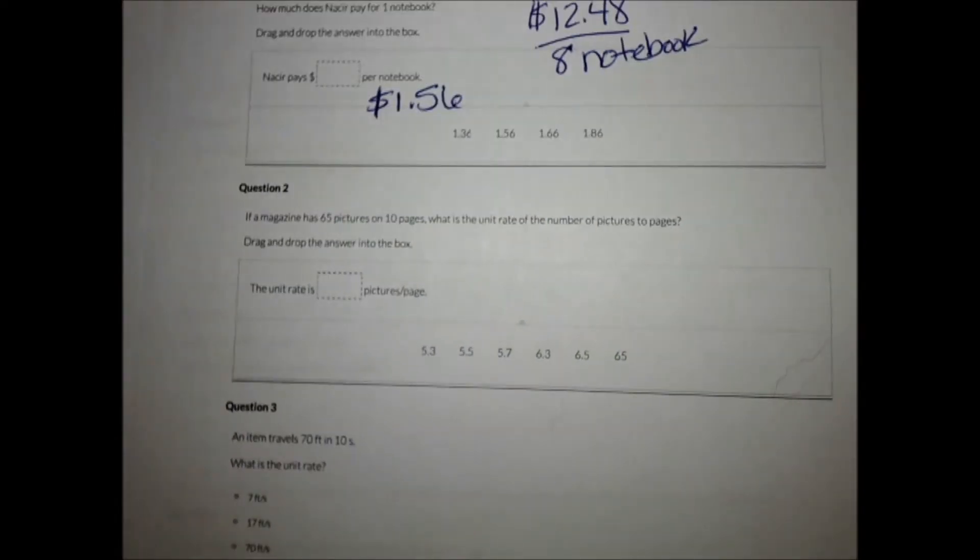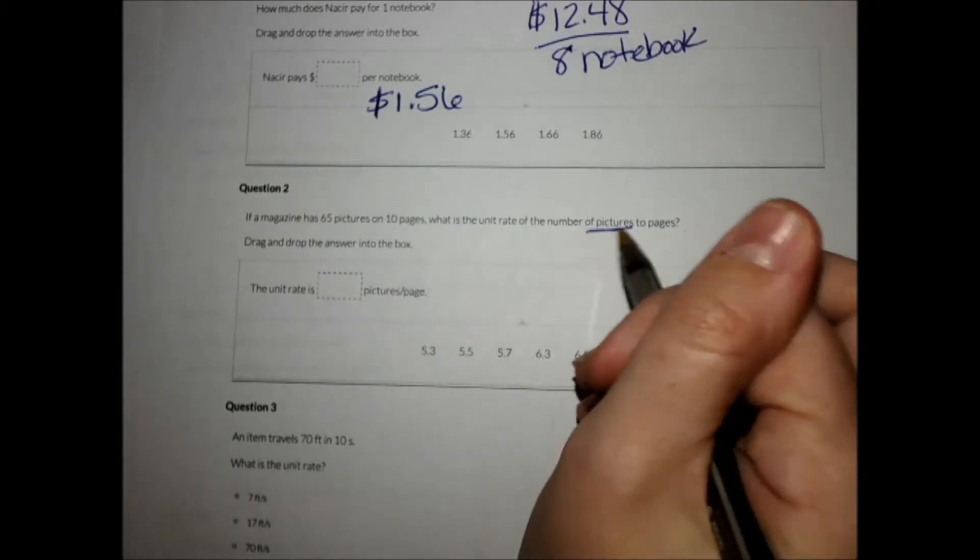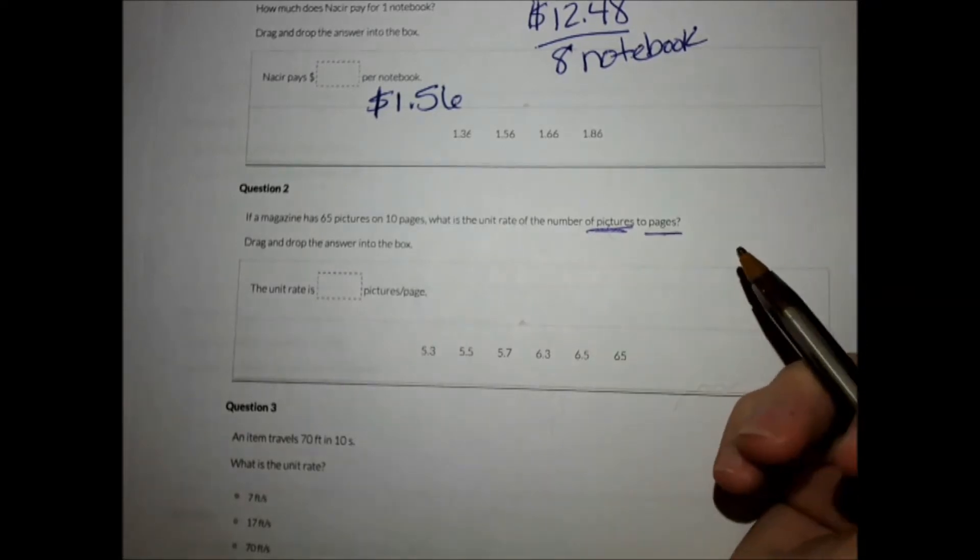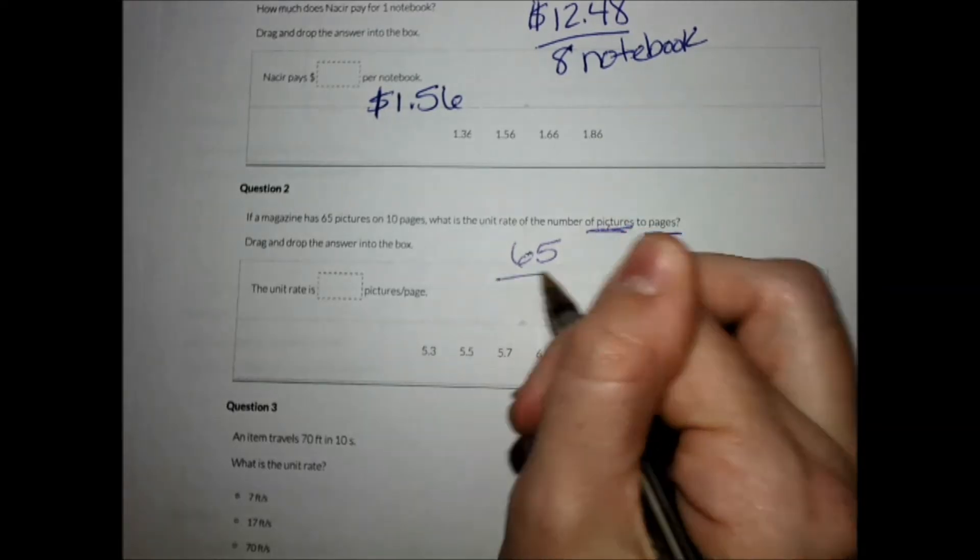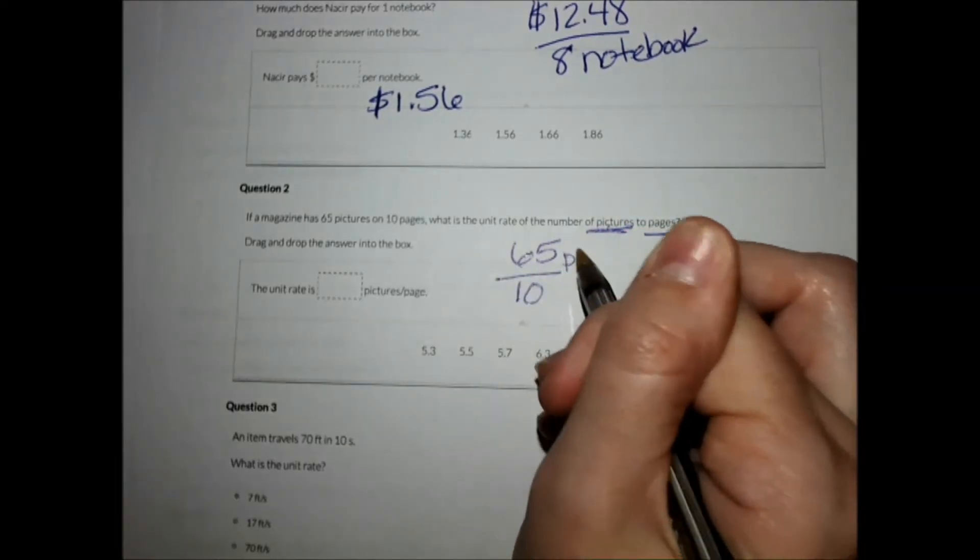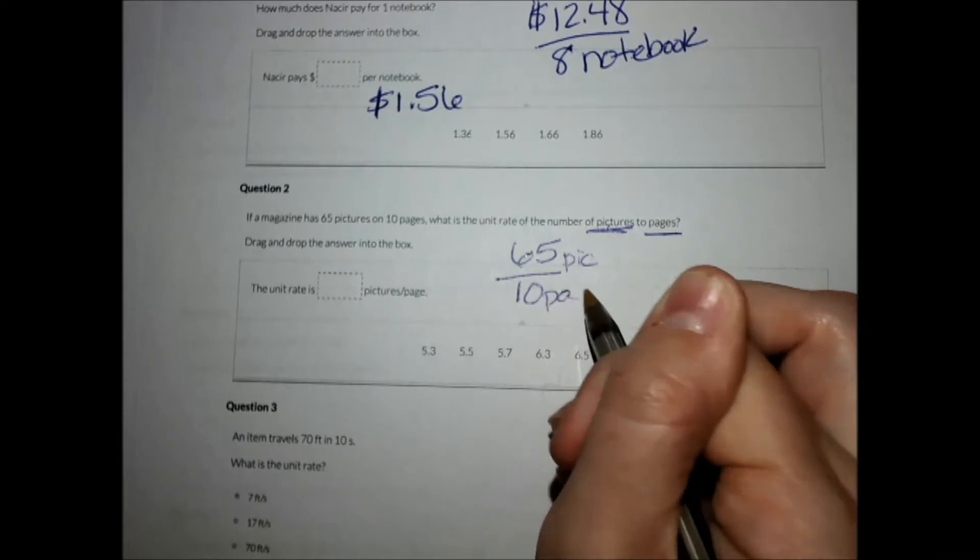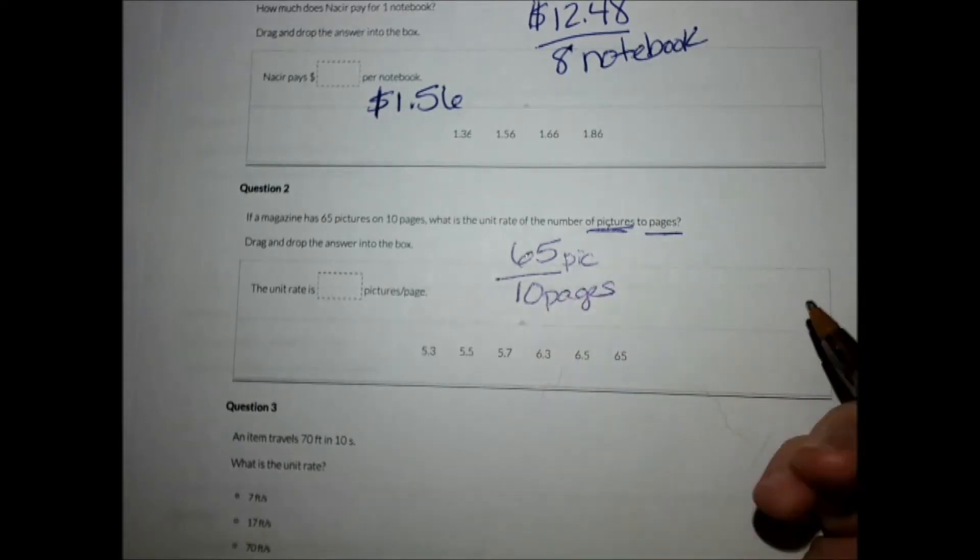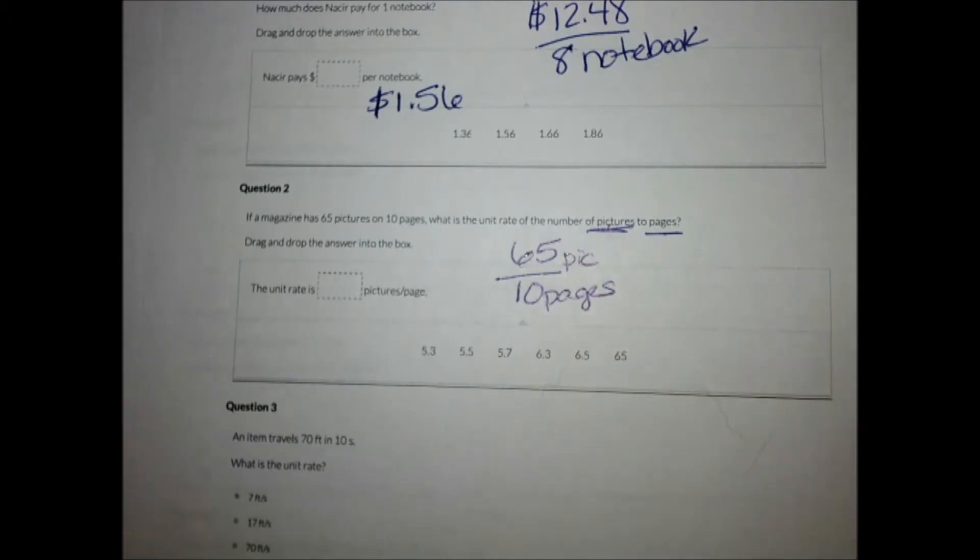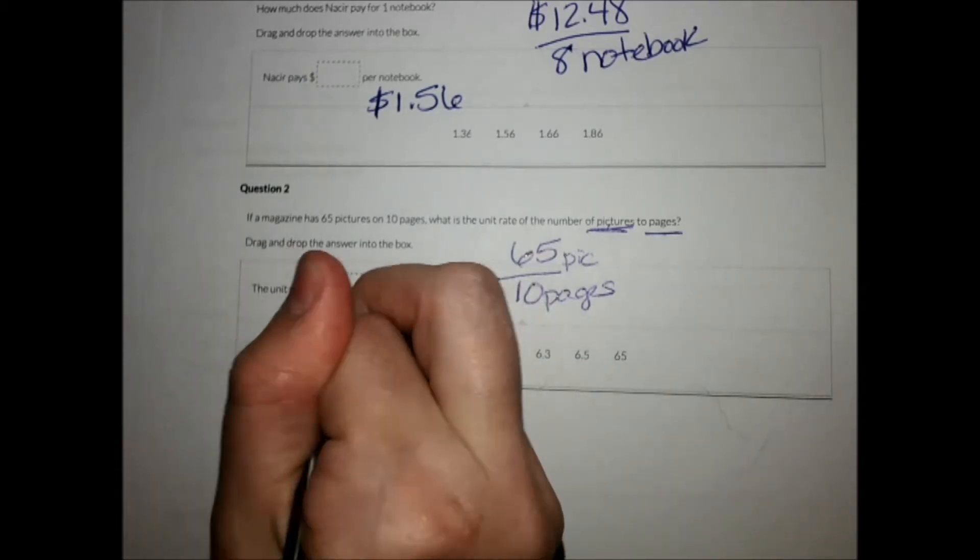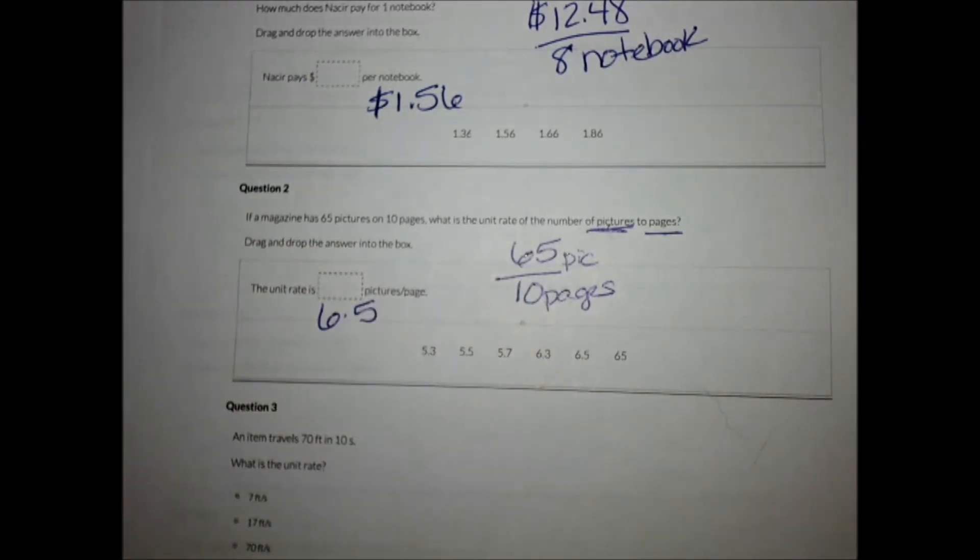Number two, if a magazine has 60 pictures on 10 pages what is the unit rate of the number of pictures to pages. So that means pictures goes on top and we've got 65 over 10 and you can still label those so you make sure you remember what they are. You can use your long division or your calculator for that division and you do come up with 6.5 pictures per page.